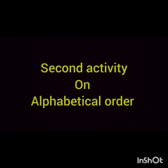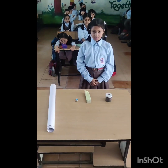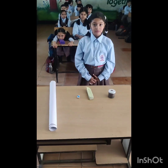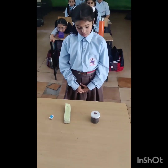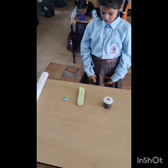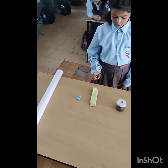Let's start our second activity on alphabetical order, where students are given a few objects and they have to arrange them in alphabetical order. So let's get started. Now you have to arrange these things in alphabetical order. First, tell me what are these things — name them.